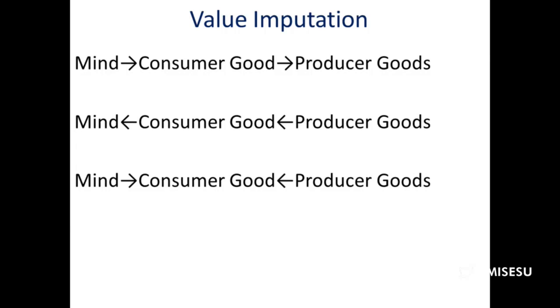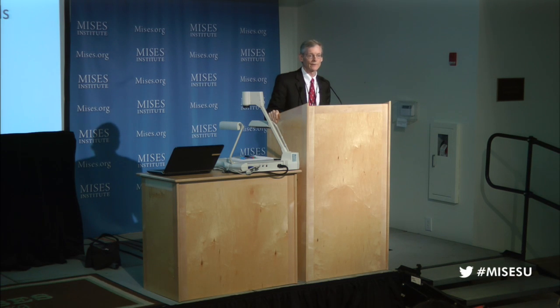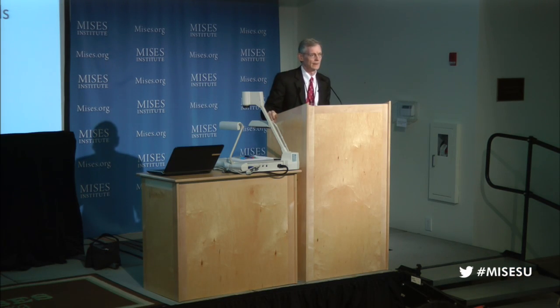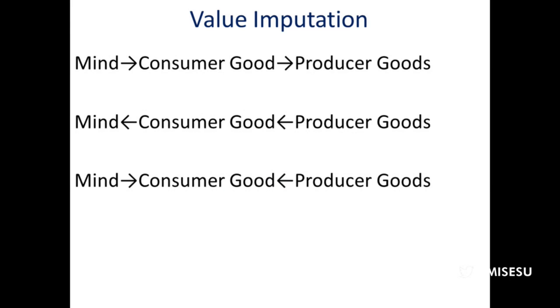This has to be this way because the whole point of engaging in action is to satisfy an end, and the formulation of the end is in our minds. So if the consumer good doesn't satisfy our end, we don't place value on it — it can't have value independent from the value we place on the satisfaction of our end. The same would be true of producer goods. As Professor Salerno pointed out on his diagram, production moves from top down, but value moves from the bottom up: from the mind to the consumer good to the producer good.